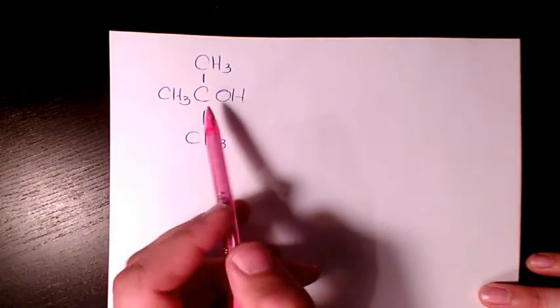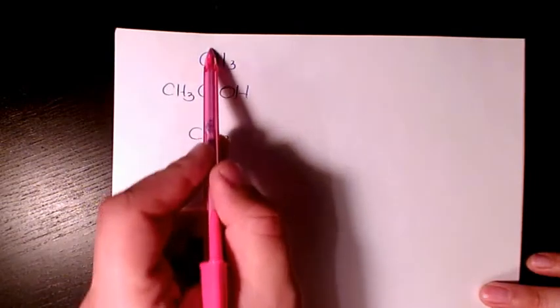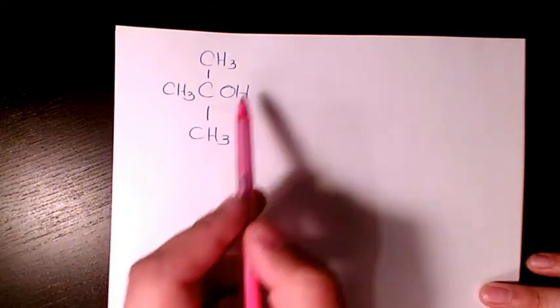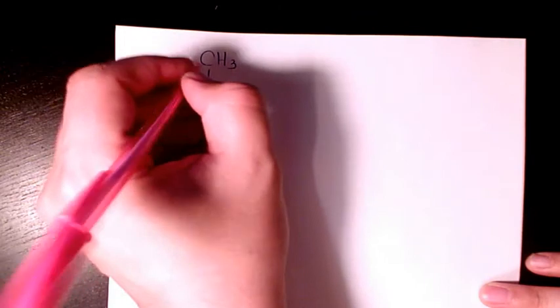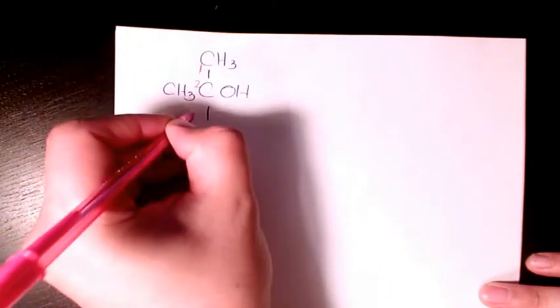So we need to find the longest chain, which is going to be this one, and we can number it. We can do it either from here or there, doesn't matter in this case. It's going to be one, two, and three.